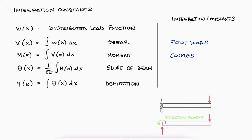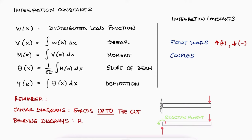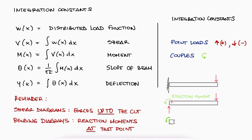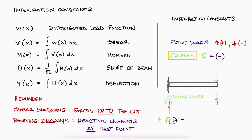The integration constants will be the external couples, including the reaction moments that originate at, for example, the wall of a cantilever beam. Remember that what we plot in shear diagrams is the forces up to the cut, not the reaction force at the cut. So for the point loads added as integration constants to the shear function v(x), forces going up are positive and forces going down are negative. What we plot on bending moment diagrams is the internal moment, meaning the reaction moment at any point along the x-axis.